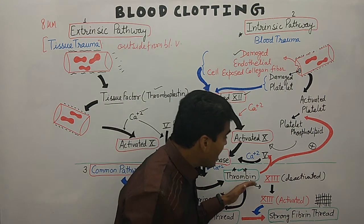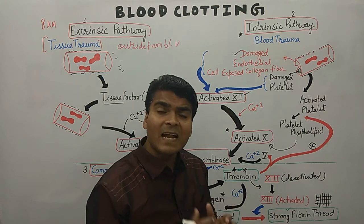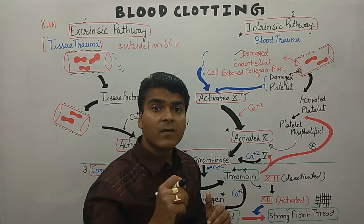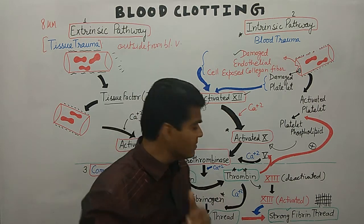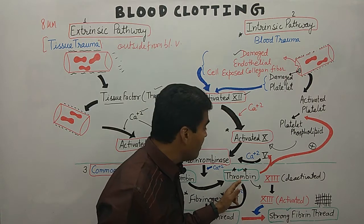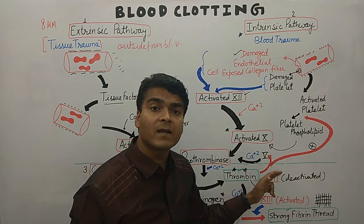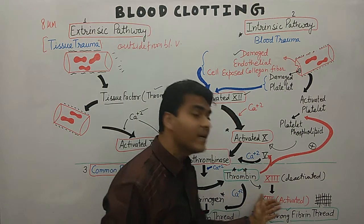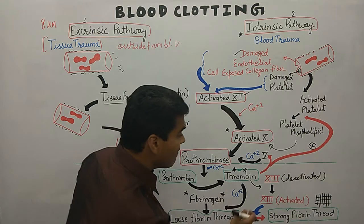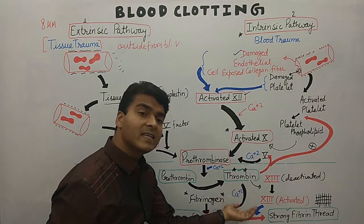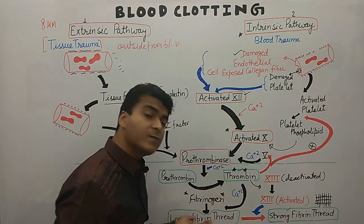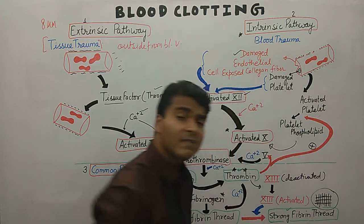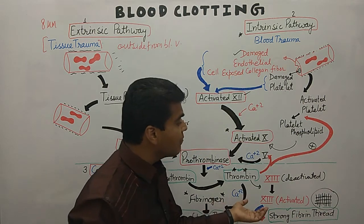We have factor number 13, which is an inactivated factor known as fibrin stabilizing factor, and its work is to strengthen the fibrin threads. Thrombin leads to activation of factor number 13 — deactivated factor 13 converts into activated factor 13. Activated factor 13 then converts loose fibrin thread into strong fibrin thread. This is how strong fibrin thread is formed.